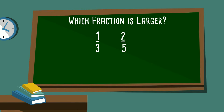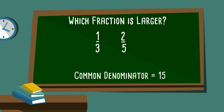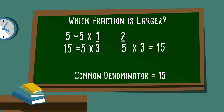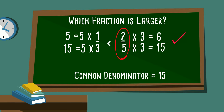Which fraction is larger — one-third or two-fifths? We're going to rename the fractions so that we have the same denominator. The common denominator of five and three is fifteen. Three goes into fifteen five times, so three times five is fifteen, and one times five is five, giving us five-fifteenths. Five goes into fifteen three times, so five times three is fifteen, and two times three is six. So six-fifteenths is larger than five-fifteenths, meaning two-fifths is larger than one-third.